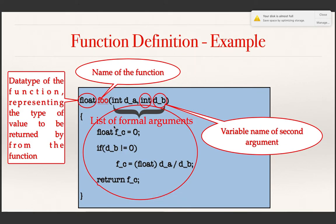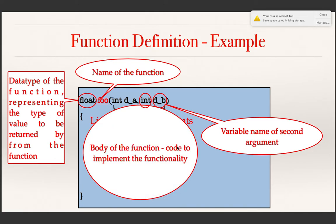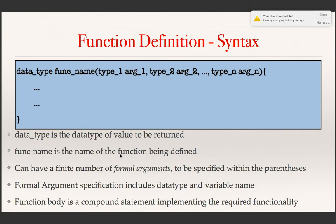Then there is a compound statement which defines the body of the function — that is the code to implement the required functionality. In general, a function definition has the form: data type, function name, a finite number of formal arguments each specified using its data type and the name, followed by a compound statement defining the functionality to be provided by the function.